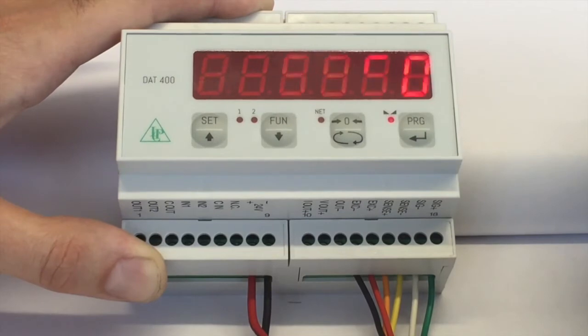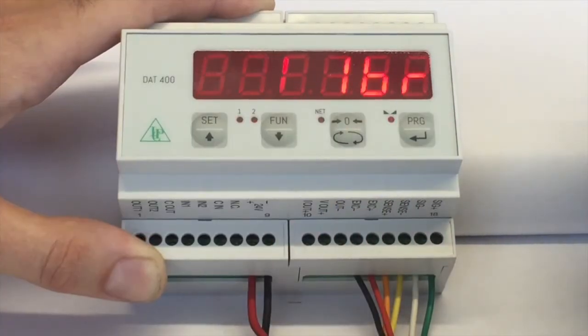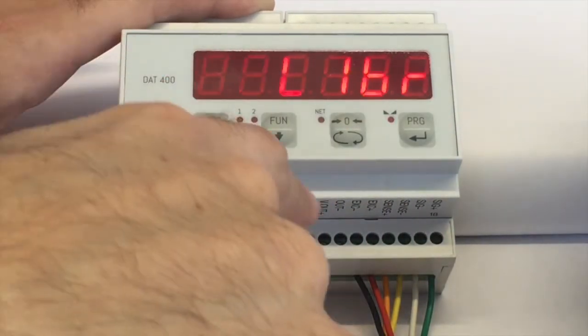Press PRG to confirm. The display will show in sequence the new value and CAL. Press the PRG button to confirm. The display will show CALIBRE.